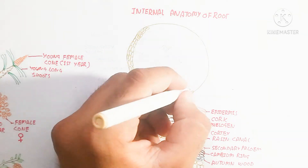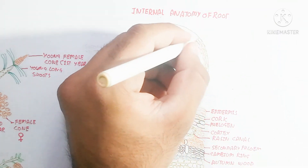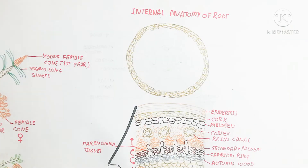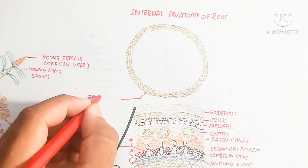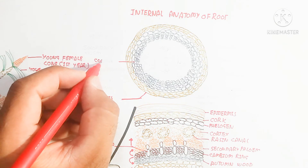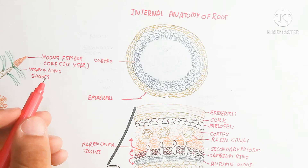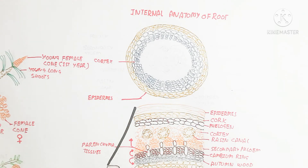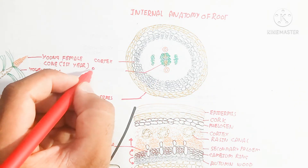Now let's talk about the internal anatomy of the root. The internal anatomy of the root is different compared to the stem. The root is used for absorption of water and minerals. The root contains a root cap. This transverse cross section of the root shows epidermis on the outside made of dead tissue, and inside is the cortex, which is made up of phellogen and canals.